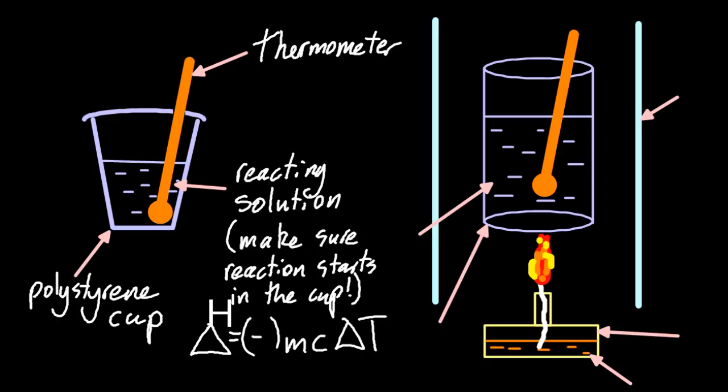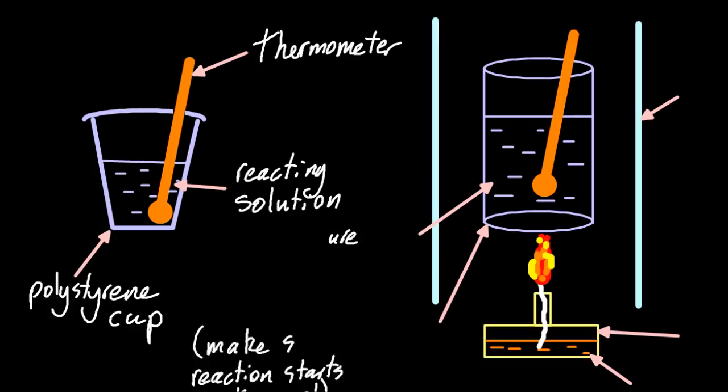Delta H is minus mc delta T. So it's the mass of what you're heating, the specific heat capacity of what you're heating or what gets heated, and the change in temperature of what gets heated. And the negative, well, I like to put it in, other people don't.